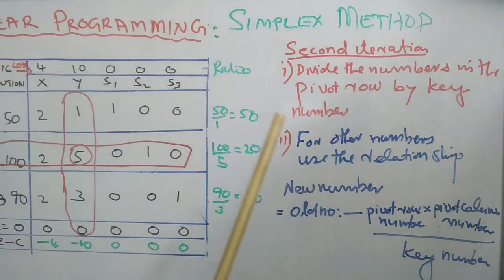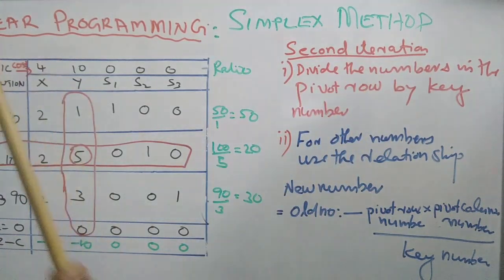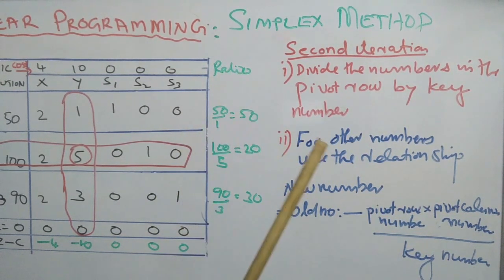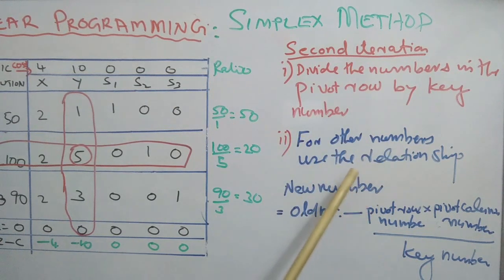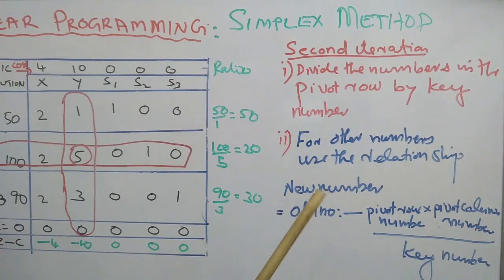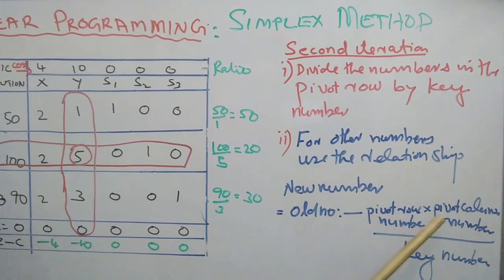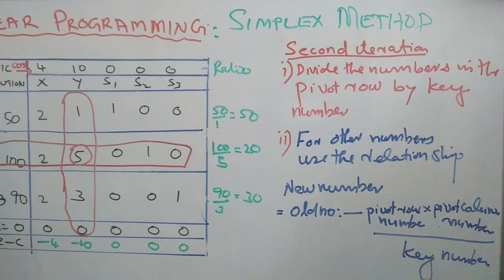Divide the numbers in the pivot row by the key number. For other numbers, use the following relationship: the new number equals the old number minus the corresponding number in the pivot row, multiplied by the corresponding number in the pivot column, divided by the key number. Then we get the second iteration.